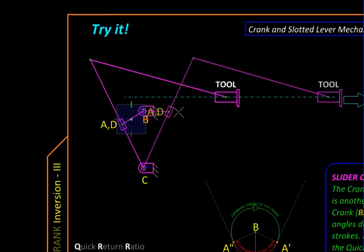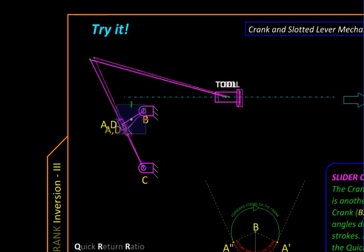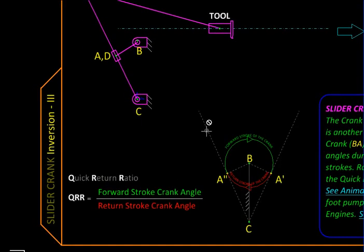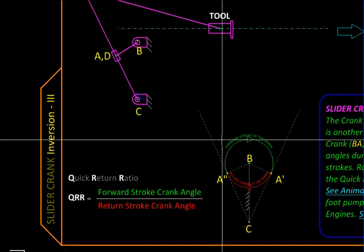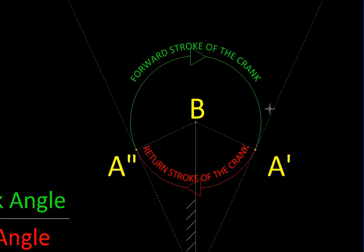Like inversion number two, we can get a quick return characteristic over here. The quick return ratio of this mechanism can be evaluated using the two extreme positions of the guide, which is usually a link with a slot in which the slider slides. These two extreme positions are nothing but tangents to the circular path of the slider, like this. This is the path of the slider and these are the two extreme positions of the slotted lever.